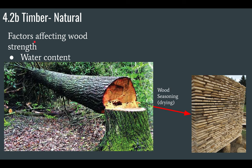Some things that affect the strength of wood include water content. Wood has a lot of water in it. When you season wood — meaning you dry it — you remove much of that water, which makes the wood stronger. Wet wood is easier to bend, so when it's dried, it's going to be stronger.